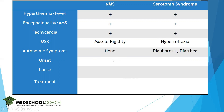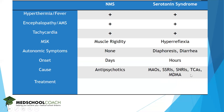In terms of onset, NMS is much slower, on the order of days to weeks, whereas serotonin syndrome is more acute, on the order of hours to a day. The cause of NMS is any antipsychotic, while serotonin syndrome is caused by anything that increases serotonin in the CNS, including MAOIs, SNRIs, SSRIs, etc. Treatment for NMS is dantrolene, a ryanodine receptor antagonist that alleviates muscle contraction from exaggerated extrapyramidal symptoms. Treatment for serotonin syndrome is cyproheptadine, a serotonin antagonist.